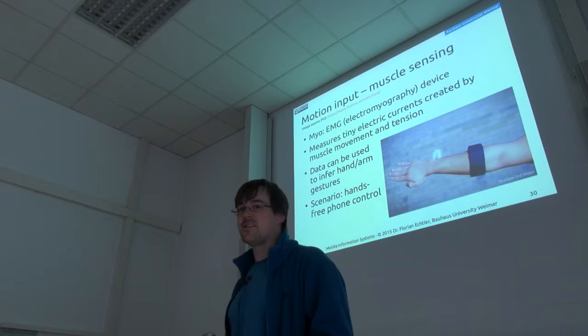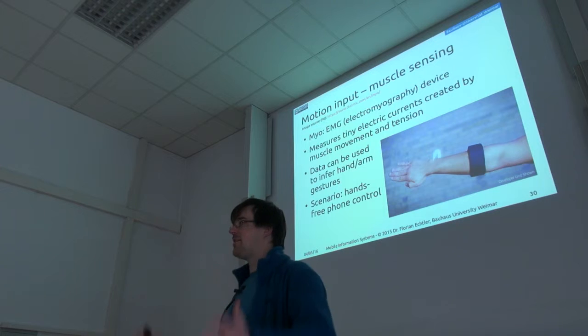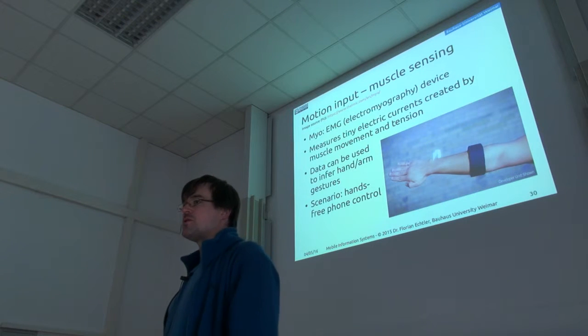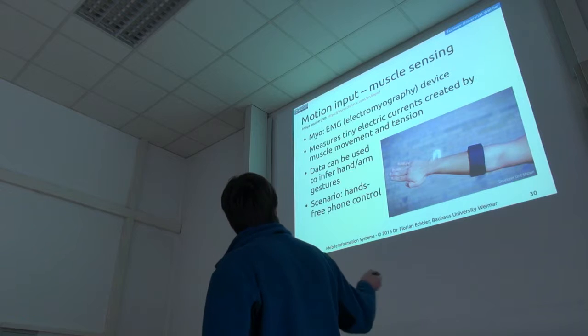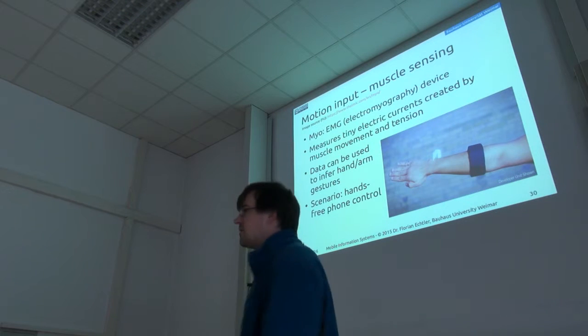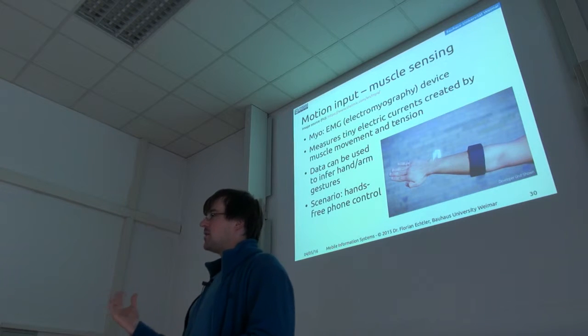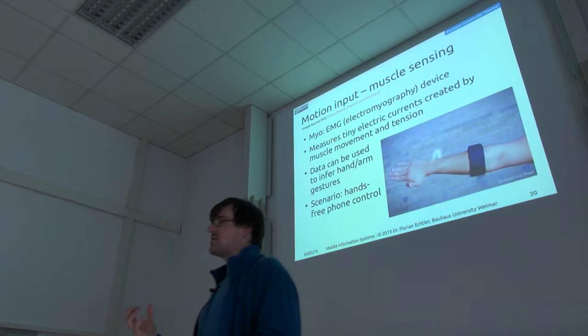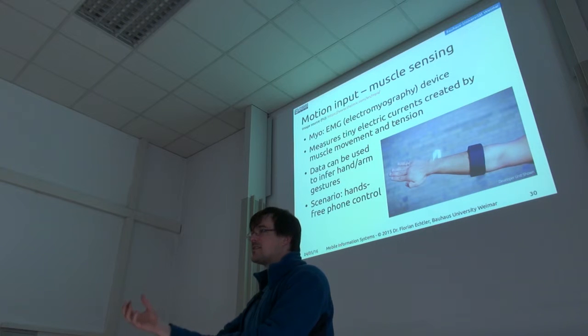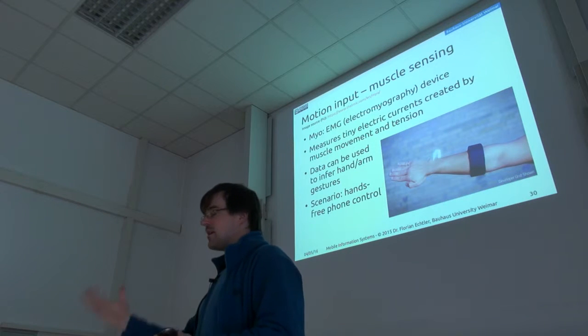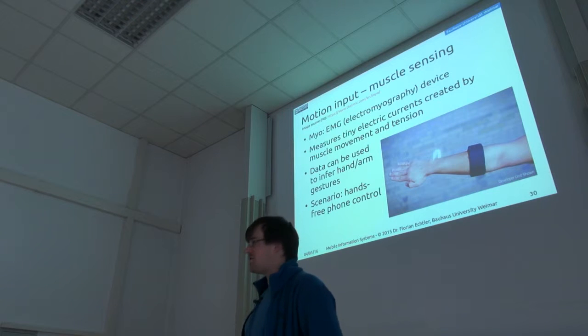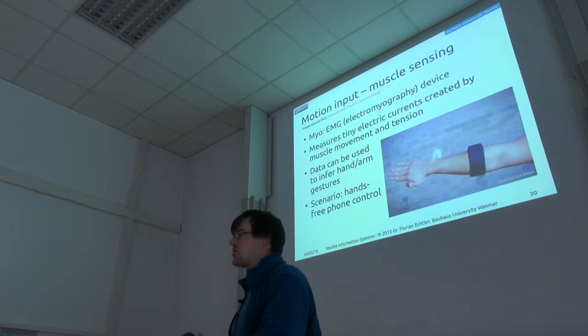But there's also other channels which fall under the big umbrella of motion which you can use. For example, you can use something like this. This is called the Mayo. It's an armband which actually senses your muscle contractions by sensing tiny electrical currents created by your muscles. And so you can differentiate between different actions you can do with your hand in free space. So you don't have to touch anything. You can just do gestures, and in theory the device should recognize that.